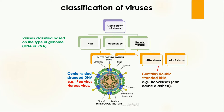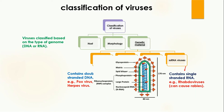The third type based on genetic material is double-stranded RNA virus. These viruses contain double-stranded RNA. Here you can see the double-stranded RNA present in this part. The example of double-stranded RNA virus is reovirus, which can cause diarrhea in organisms.